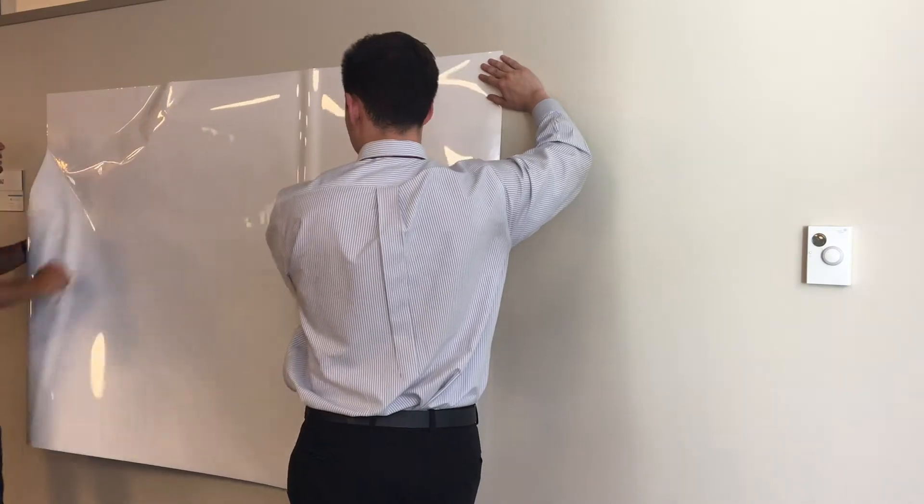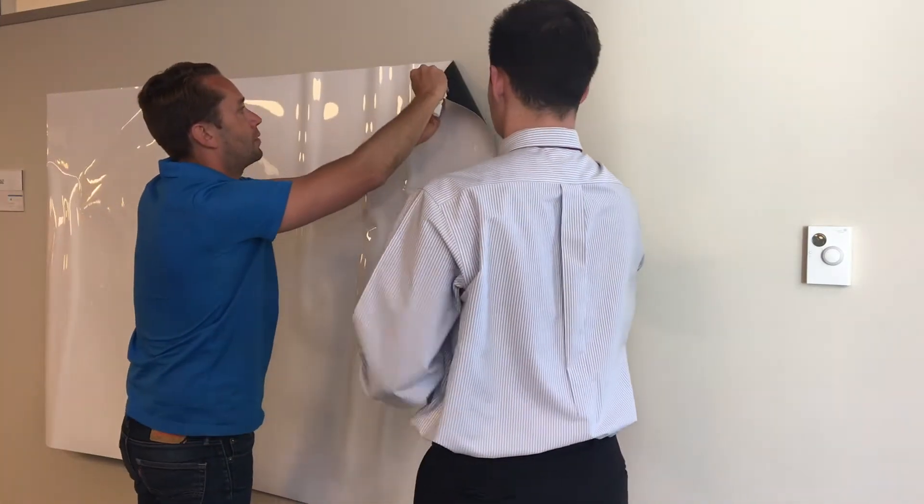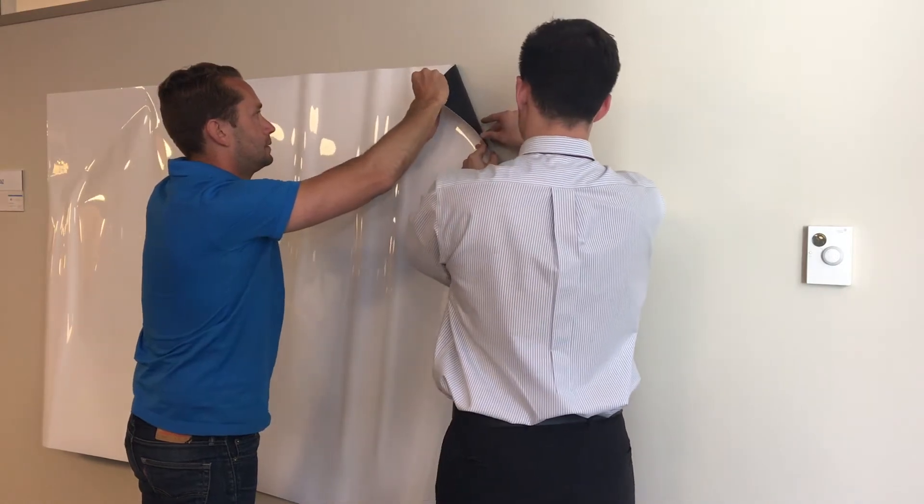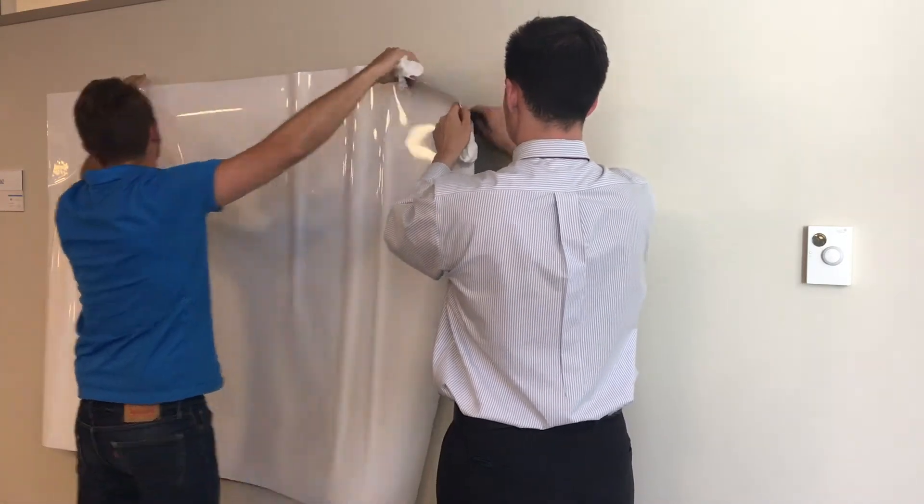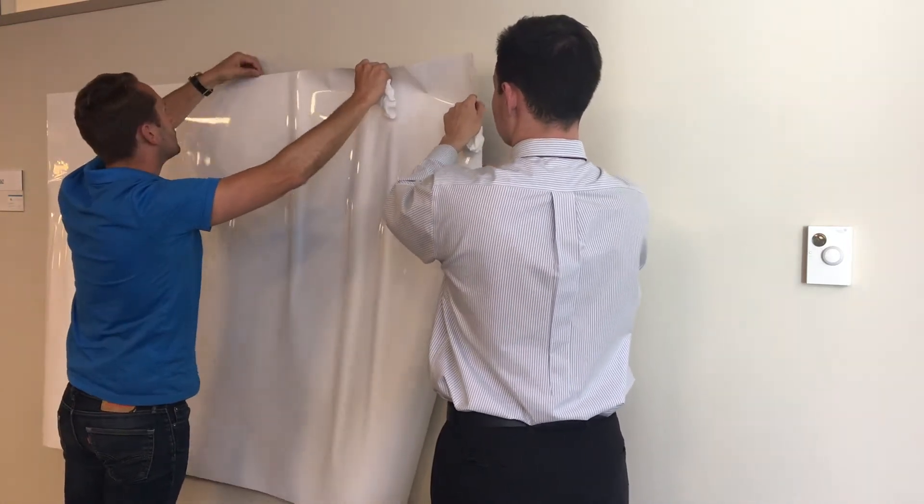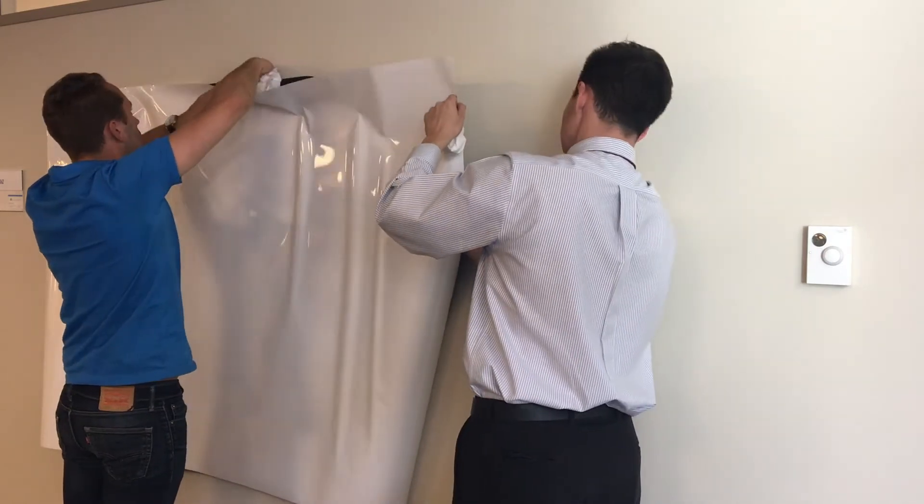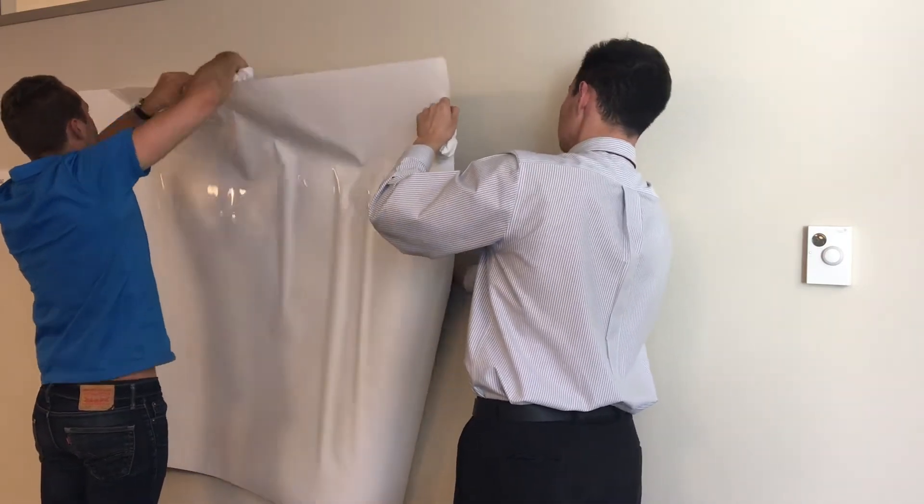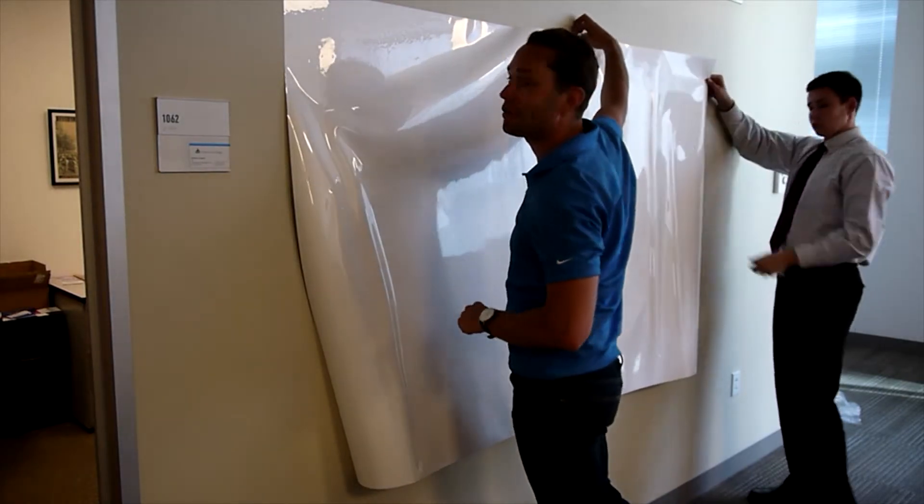Because of the size of this particular dry erase surface which was 4x6, I started in the corners and it helps to identify and make sure that you get a level install. Ultimately I wound up having to remove the entire thing and take the backing off before doing any adhesion because it was such a big surface.